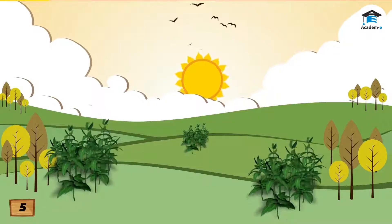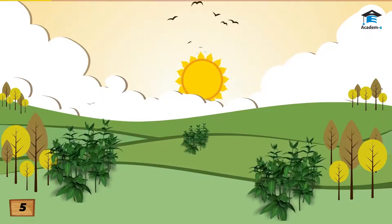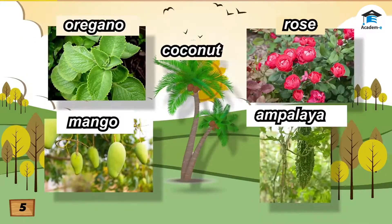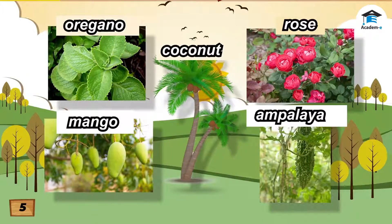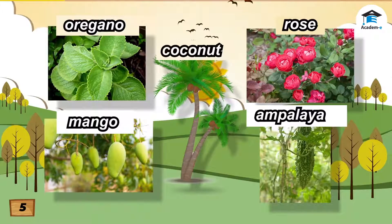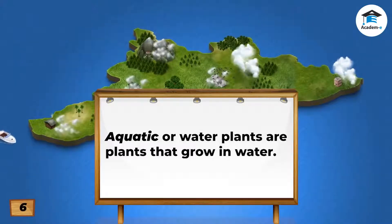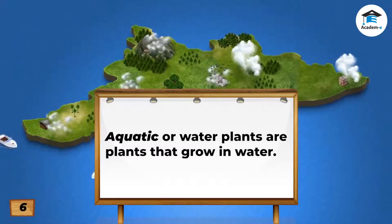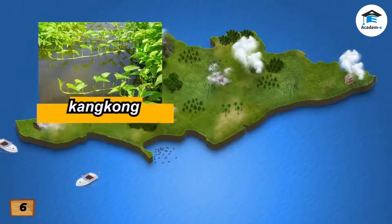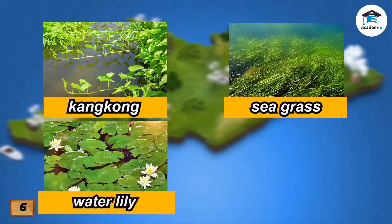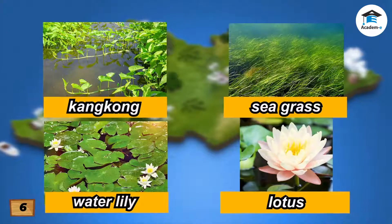Terrestrial plants grow best in loam soil. Examples of these plants are trees, shrubs, bushes, and vines. Aquatic, or water plants, are plants that grow in water. Kong-kong, seagrass, water lily, and lotus are examples of aquatic plants.